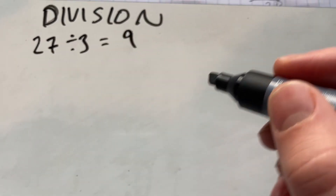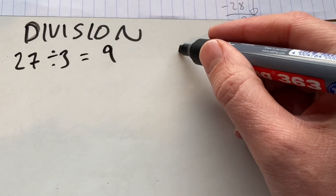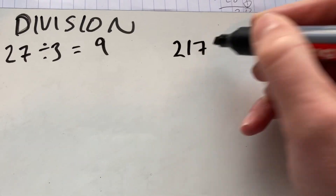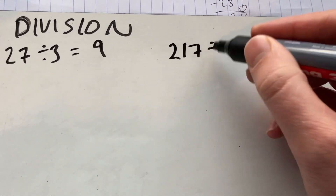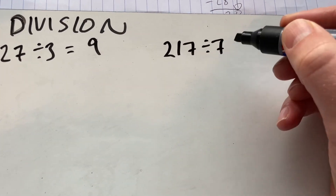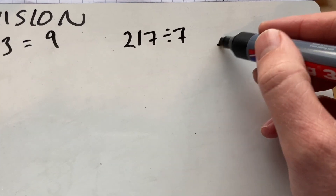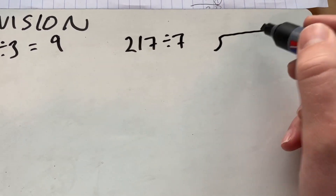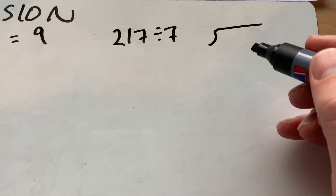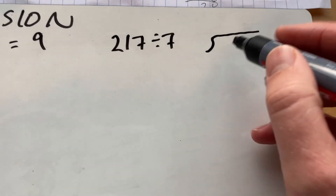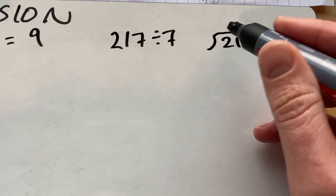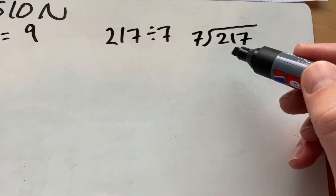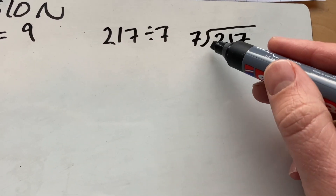Let's take a number that we don't necessarily know — say 217 — and we want to divide that by 7. We'll use this symbol, which a lot of people call the bus stop, and we'll put 217 under there. And we divide that by 7.